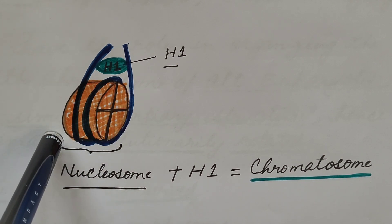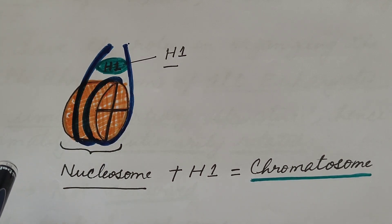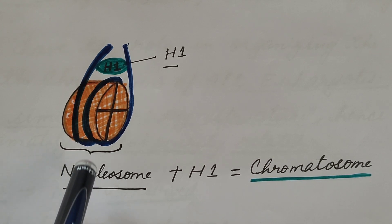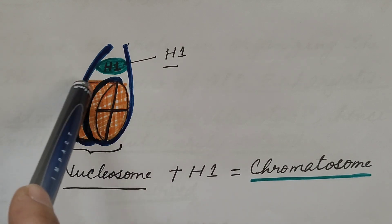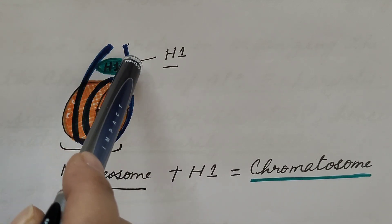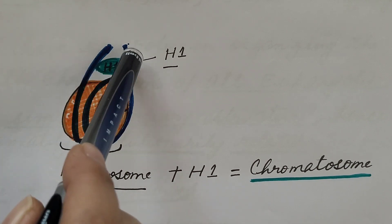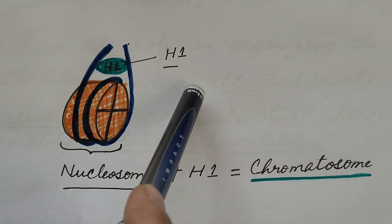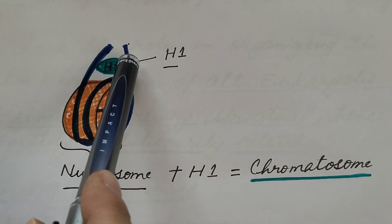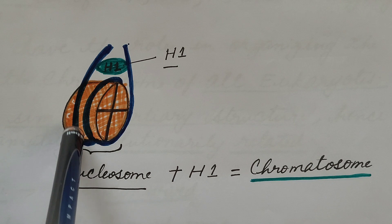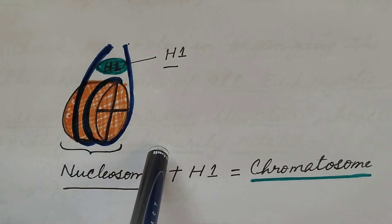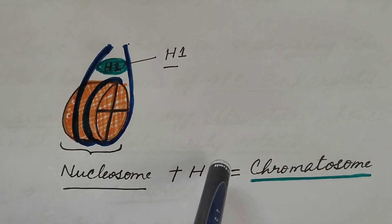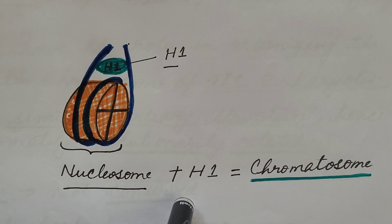The nucleosome is the octamer of four histone proteins — H2A, H2B, H3, and H4. H1 histone is not part of the nucleosome; it binds to the linker DNA and is therefore known as linker histone. It binds to the region where the DNA enters and leaves the nucleosome or octamer. Nucleosome along with H1 histone protein is known as chromatosome.